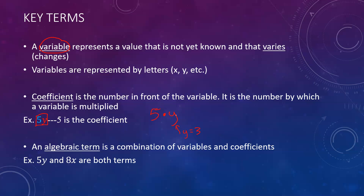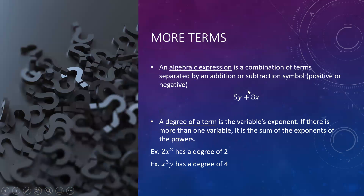An algebraic term is the combination of variables and coefficients — essentially, the variable and the coefficient put together. So in 5y, the 5 is the coefficient and y is the variable. Similarly, with another example, the number in front is the coefficient and x is the variable. These are just definitions — we're not actually doing any math yet. I just want to make sure you're clear on what these words mean, because we're going to be using them a lot throughout this unit and also throughout math in the future.